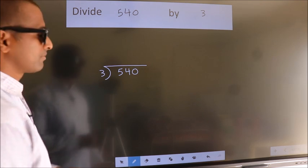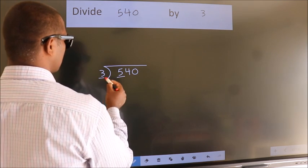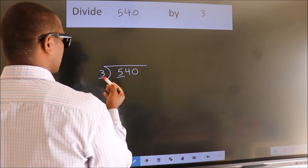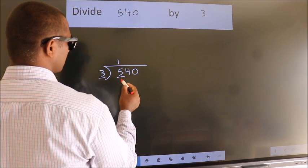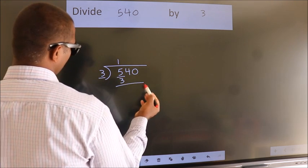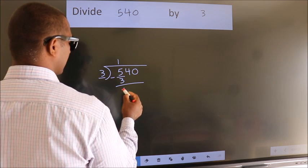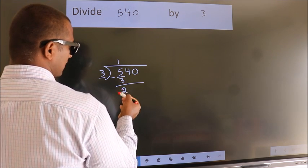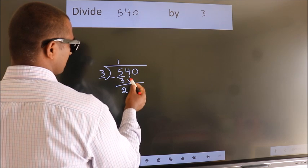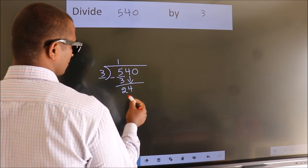Next, here we have 5, here 3. A number close to 5 in the 3 table is 3 ones 3. Now we should subtract, we get 2. After this, bring down the beside number. So 4 down, so 24.